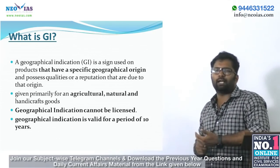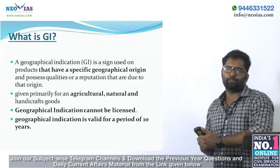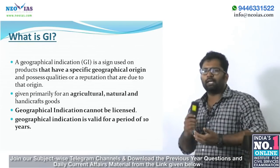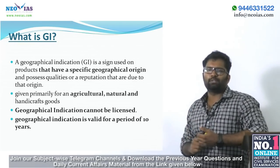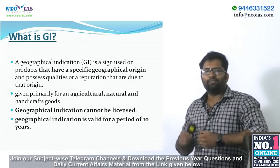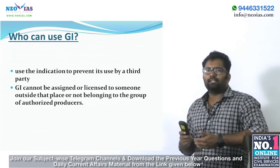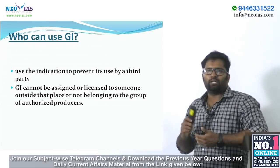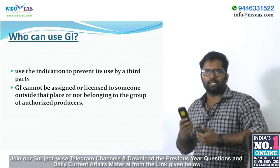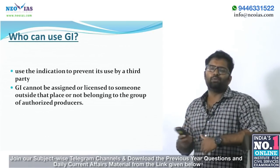A geographical indication or GI tag is a sign used on products that have a specific geographical origin and possess qualities or a reputation due to that origin. It is given primarily for agricultural, natural, or handicraft products originating from a definite geographical territory. The first product to get a GI tag in India was Darjeeling tea in 2004. Unlike a trademark, geographical indication cannot be licensed.